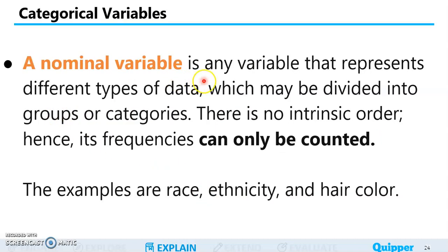A nominal variable is any variable that represents different types of data which may be divided into groups or categories. There is no intrinsic order, hence its frequencies can only be counted. So we have no ranking, there's no specific order in nominal variables. When we say nominal, it comes from the word name.